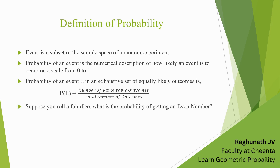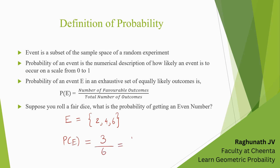Suppose you roll a fair dice. What is the probability of getting an even number? Let us define the event as the set of even numbers of that experiment. The probability of that event is the number of favorable outcomes, which is 3, divided by the total number of outcomes, which is 6. Hence, it is 1/2.